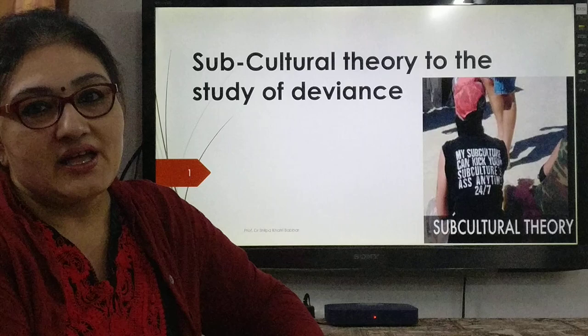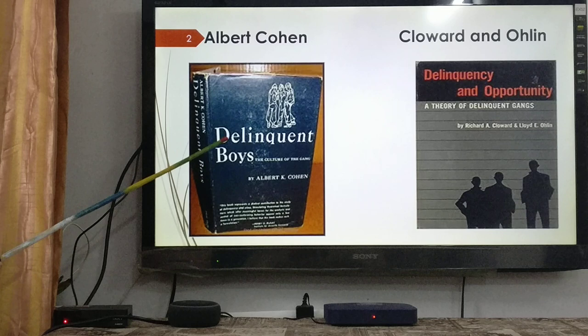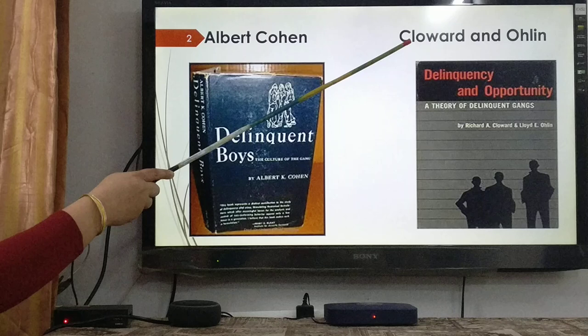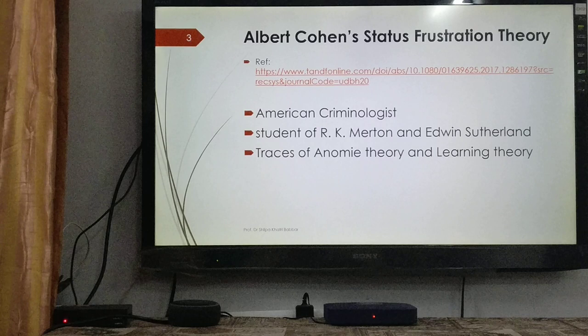In subcultural theory, with specific reference, as you will see on the screen, we shall be dealing with two theorists: Albert Cohen and his work Delinquent Boys, and Richard Cloward and Lloyd Ohlin and their work Delinquency and Opportunity. We move on first to Albert Cohen and his Status Frustration Theory.